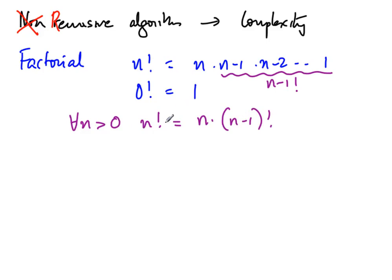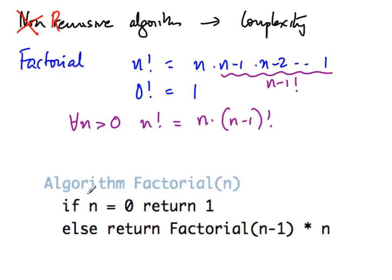This gives us a recursive function for factorial of n: if n is 0, return 1; otherwise return n times factorial of n minus 1. The formal algorithm takes input n — if n is 0 you return 1, otherwise you return the same function applied to n minus 1, multiplied by n. Remember that this is a number-theoretic function, so the input is actually log n, but we want to estimate its complexity as a function of n.